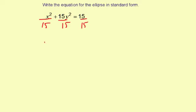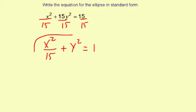So it's going to be x squared divided by 15 plus — the 15 divided by 15, those reduce out — so you're just going to have y squared equals 15 divided by 15, which is 1. That's your answer.